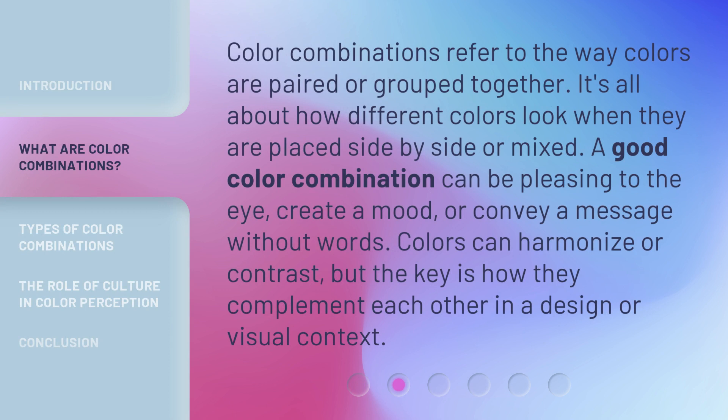Color combinations refer to the way colors are paired or grouped together. It's all about how different colors look when they are placed side by side or mixed. A good color combination can be pleasing to the eye, create a mood, or convey a message without words. Colors can harmonize or contrast, but the key is how they complement each other in a design or visual context.